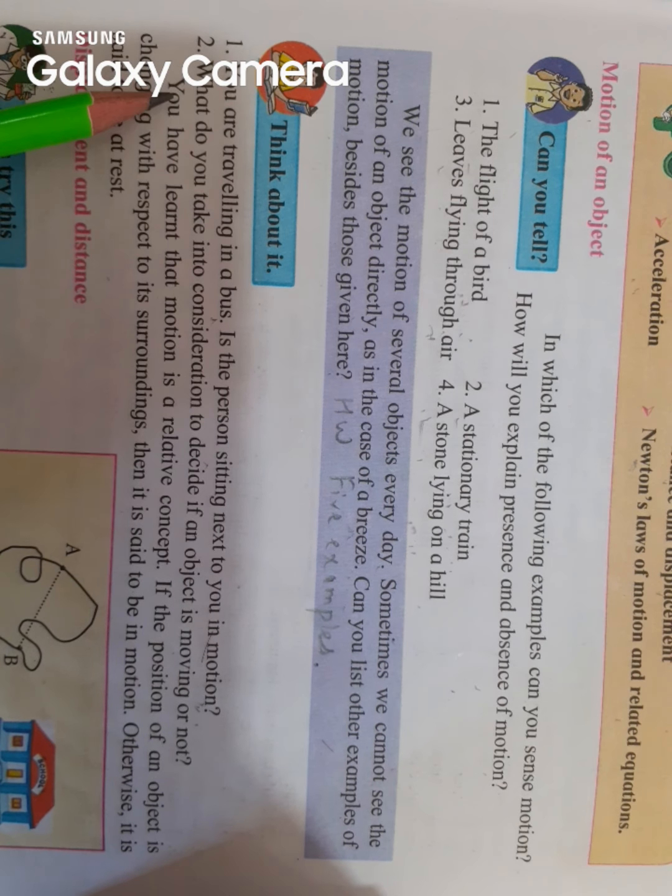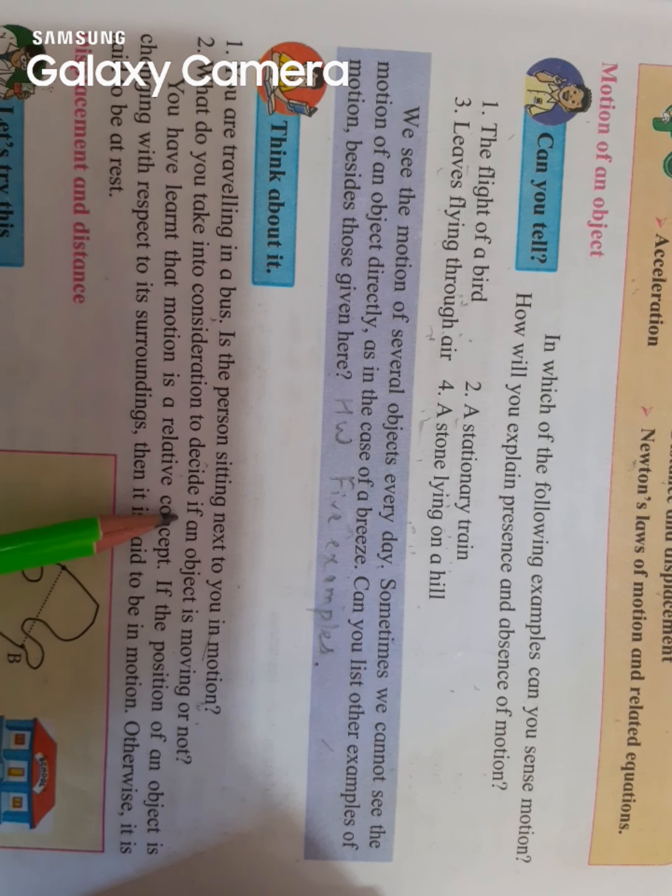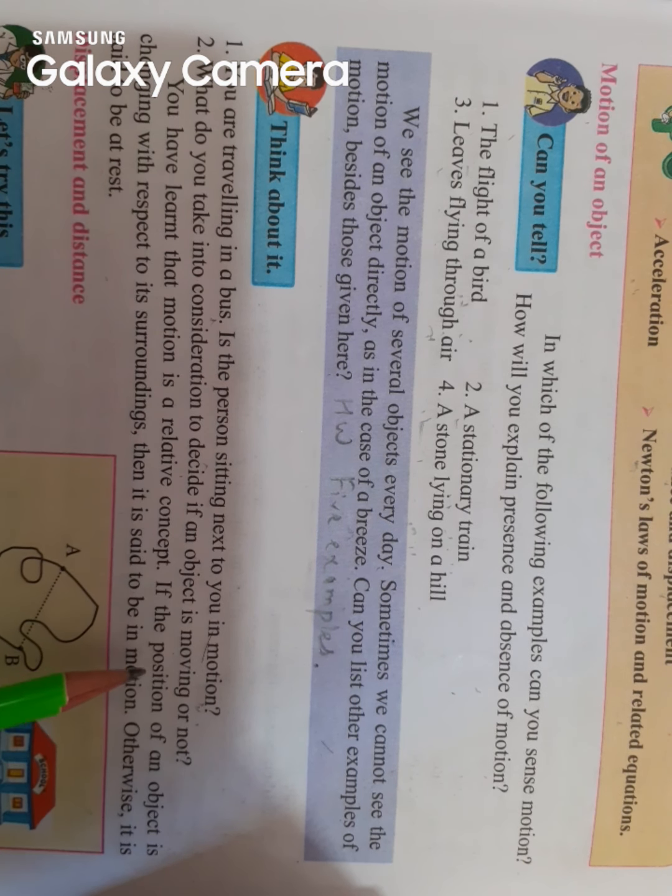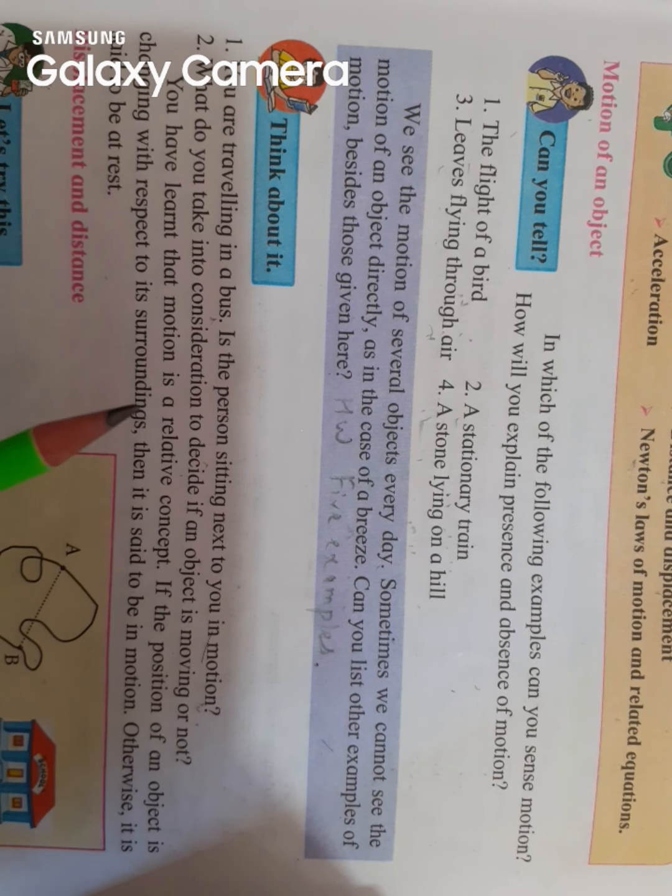The second question is: what do you take into consideration to decide if an object is moving or not? Suppose if I ask you that you are moving, how will you prove that you are moving? You will say that you have covered a particular distance from one point to another point. Let's say you have come to the school from home, so you have covered a distance. Since you have covered certain distance, you will say your position has changed, and therefore you are moving or in motion.